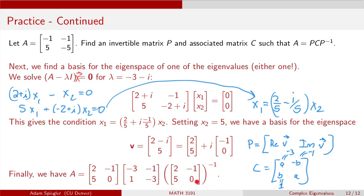We then multiply on the right by the inverse of matrix P. You can verify that this product is going to give us back matrix A, which had the first column minus 1, 5, and the second column minus 1, minus 5.